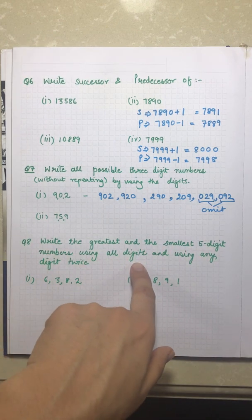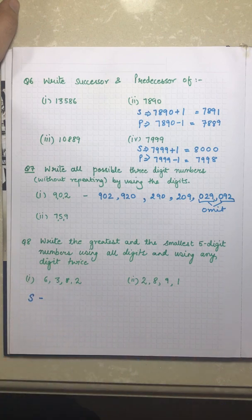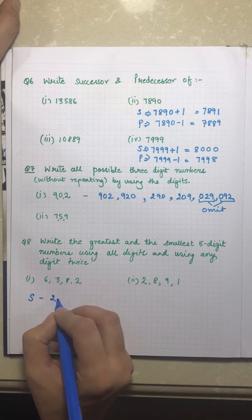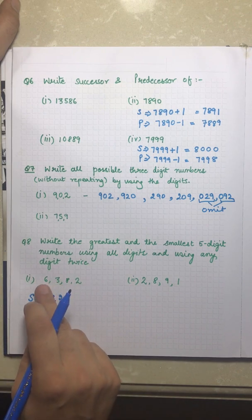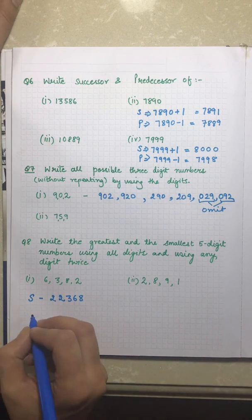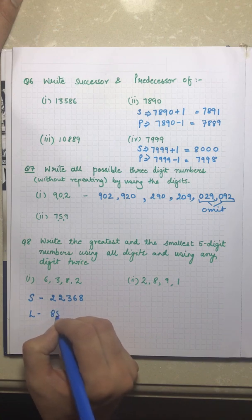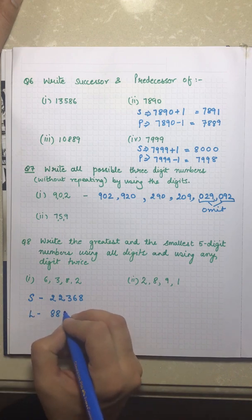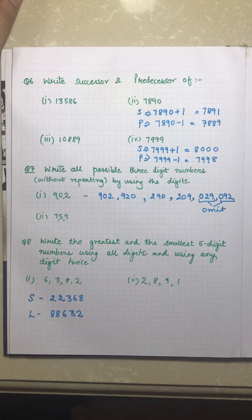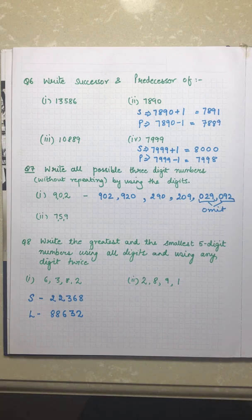Question number eight says: write the greatest and smallest five-digit number using all given digits, with one digit used twice. For the smallest number, place the smallest digit — two — first, then arrange remaining digits in ascending order: 22,368. For the largest number, place the largest digit — eight — twice in front, then six, three, two: 88,632. That's it for today's video — please like, share, and subscribe. Bye bye!